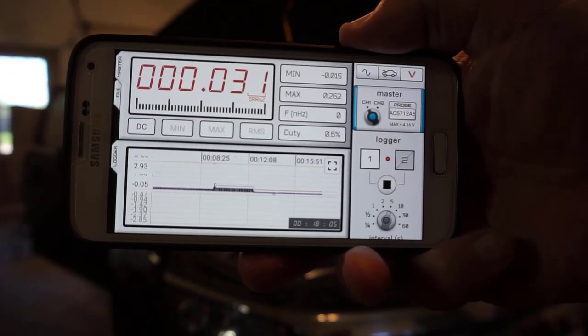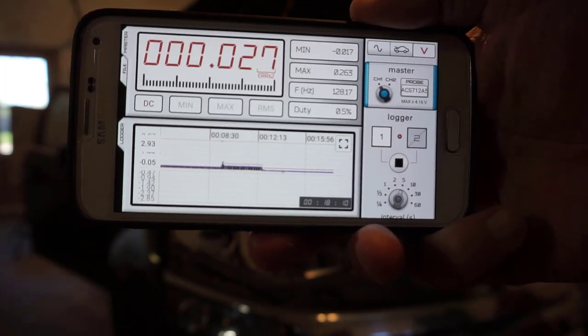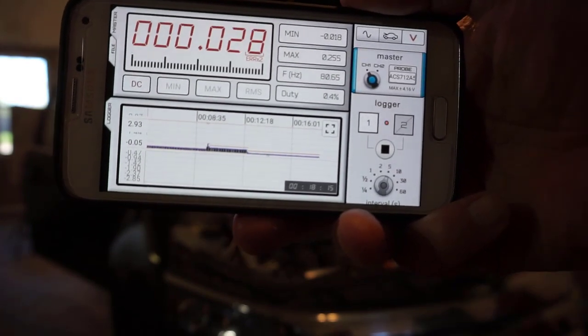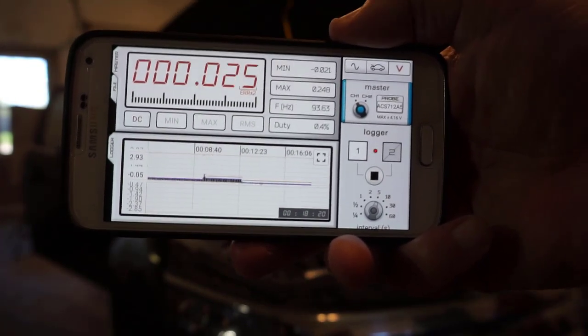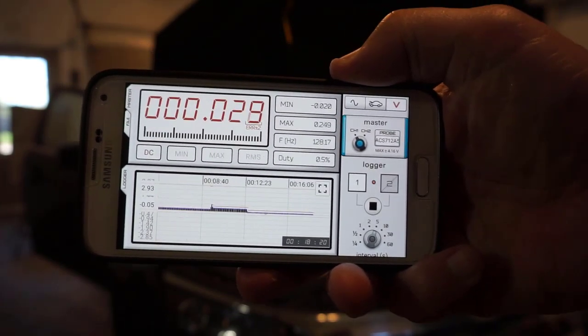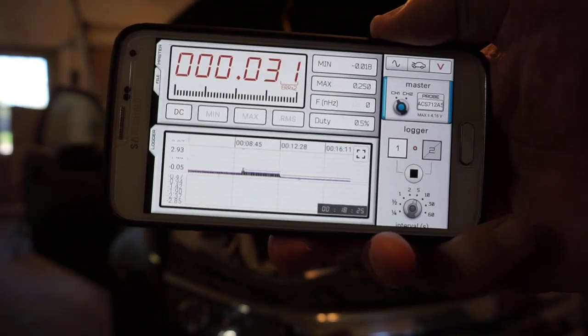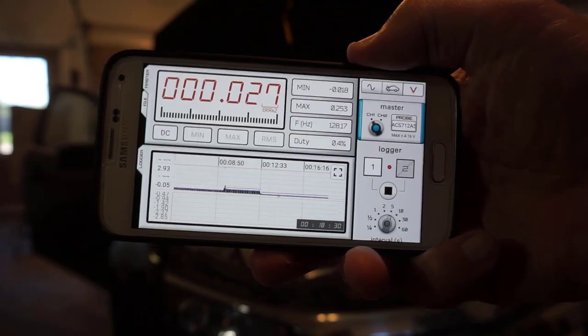Another thing that this Wi-Fi logger can do that an ammeter cannot is that if we suspect that perhaps these modules reawaken for some reason, maybe the instrument cluster, maybe some aftermarket crap that malfunctions and reawakens everything, then we're able to put the logger and have it log overnight if we wish.